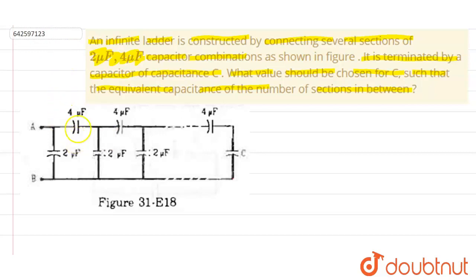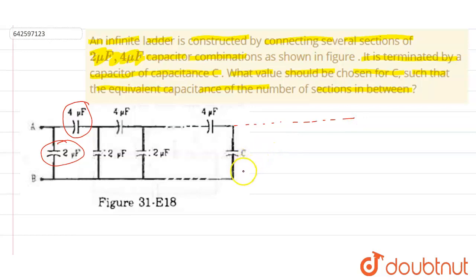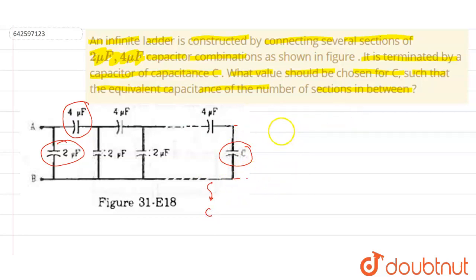As per the question, we have two capacitances — two microfarad and four microfarad — which form an infinite ladder. This infinite ladder is terminated by using this capacitance C. So we can say that if we terminate the whole section, this capacitance will be equal to C.